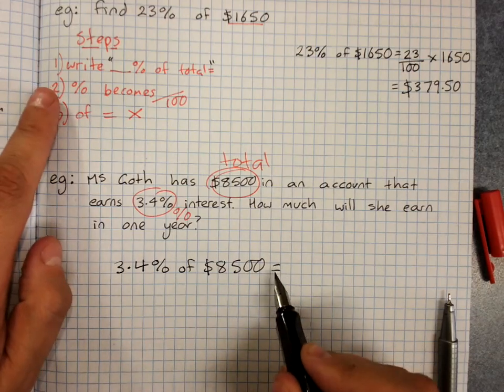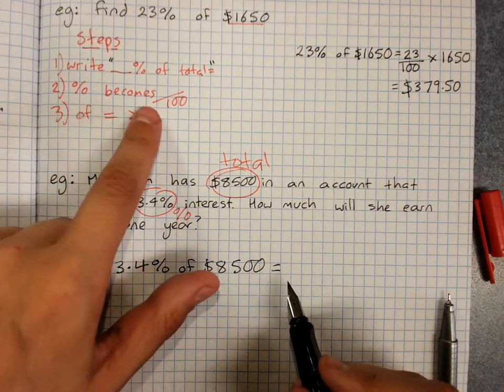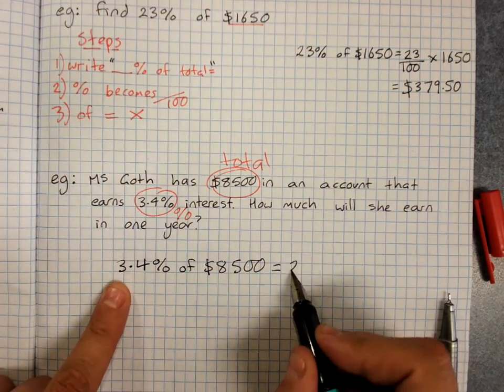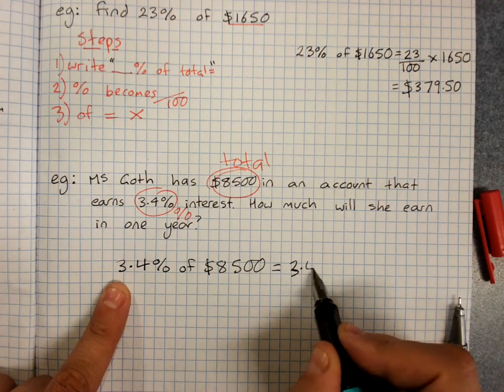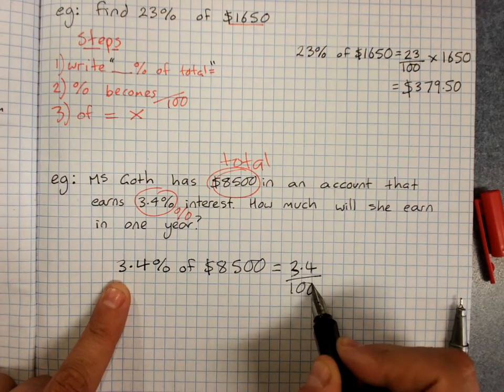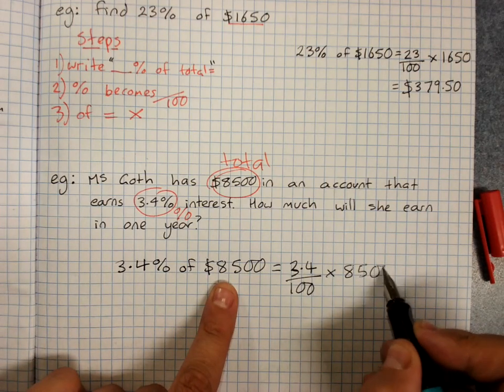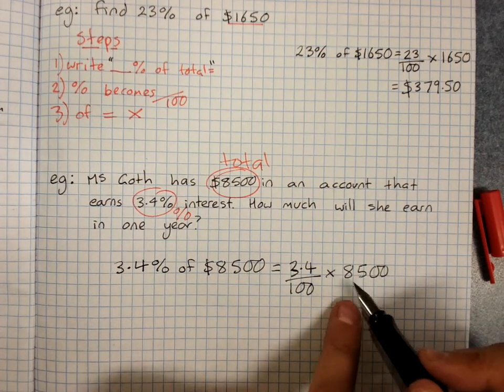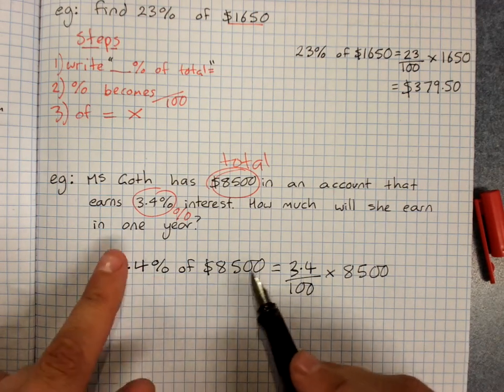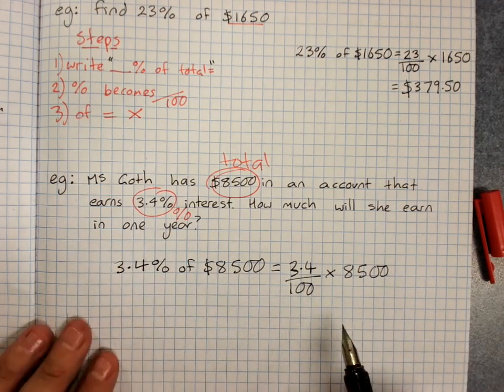Then you put your equal sign and you rewrite your percentage as the number over a hundred. 3.4 over a hundred. Your of is times and $8500. You don't normally put dollar signs in your working only at the start when you're saying what you're doing and at the end when you've got your answer.